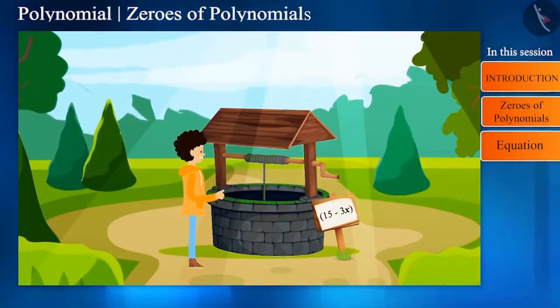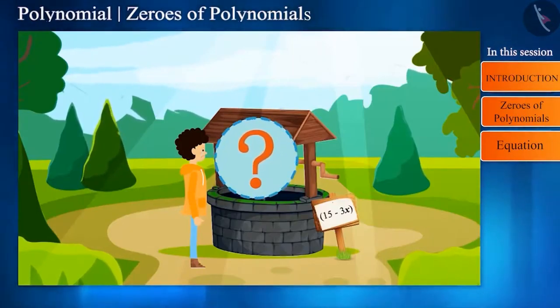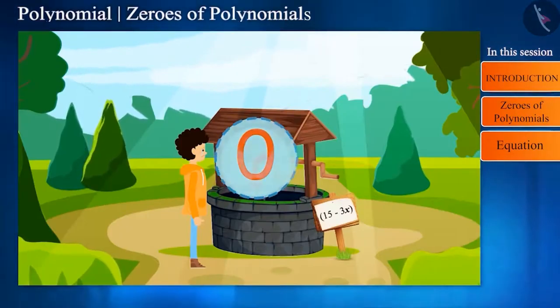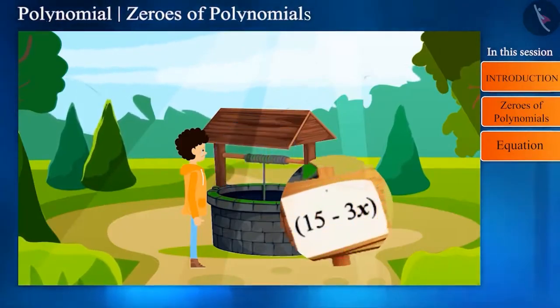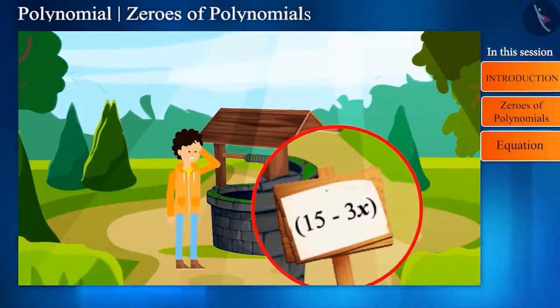Then he dropped 5 rupees. But this time, he did not get anything. And if we say in the language of mathematics, he got 0. Friends, Rahul has seen this board near the well, but he did not pay attention to it. Did you notice this board?